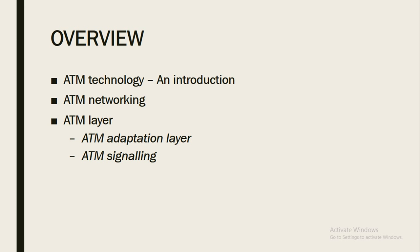As we talk about the Asynchronous Transfer Mode, some of the things we're going to be discussing: I'll be introducing what the ATM technology actually is, where it came from, why it was invented, and why you may want to choose ATM over some other kind of technology for your wide area network. Next we'll be discussing the networking itself — how to lay out the ATM network, some of the components you'll need, and then finally we'll be discussing the layers of ATM technology: the adaptation layer and then the signaling layer.